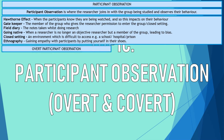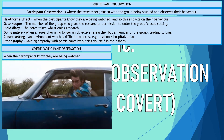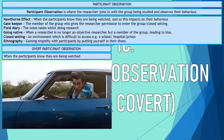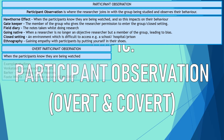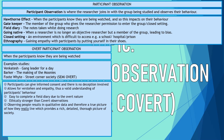Overt participant observation is where the participants know they're being watched — the researcher is open about their role, position, or purpose. Key examples include Venkatesh's 'Gang Leader for a Day,' Barker's 'Making of the Moonies,' and Whyte who studied street corner society. Whyte is considered semi-overt: he was open with the main gang leader Doc, but the rest of the gang didn't know.